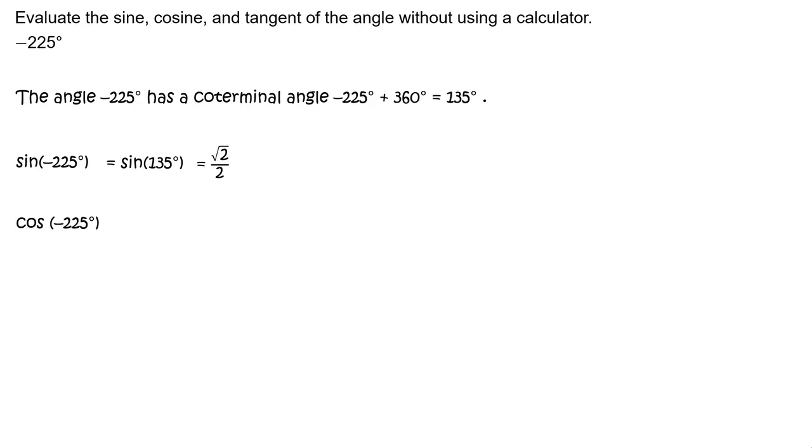Cosine of negative 225 degrees equals cosine of 135 degrees, which equals negative square root of 2 divided by 2.